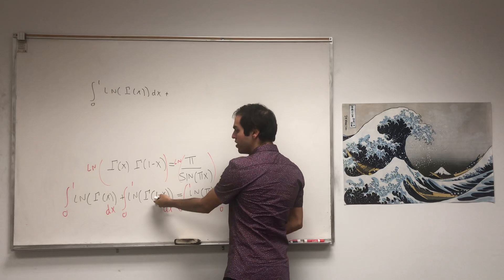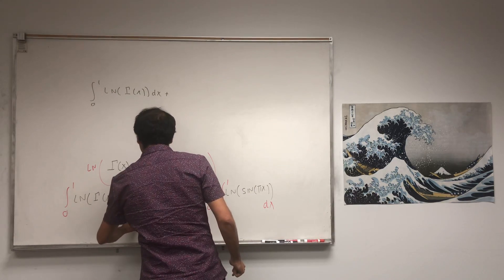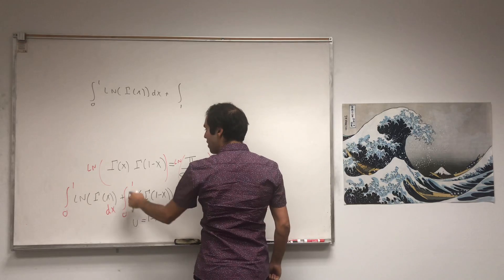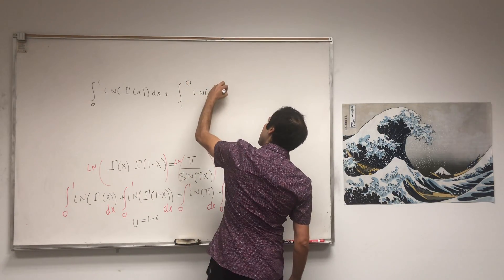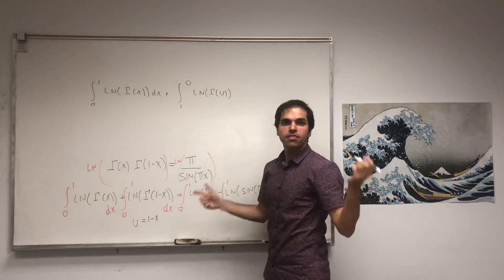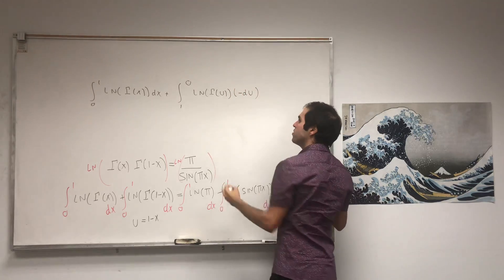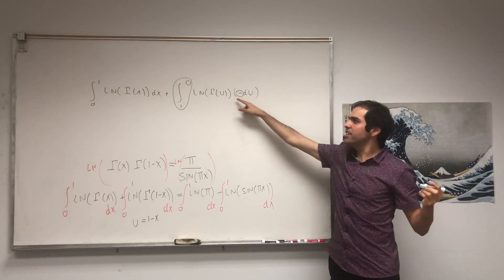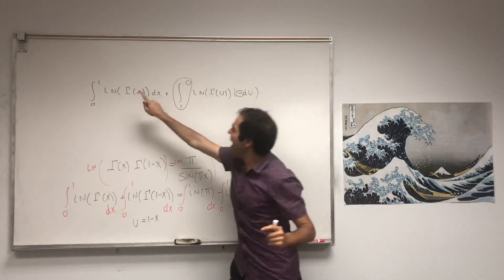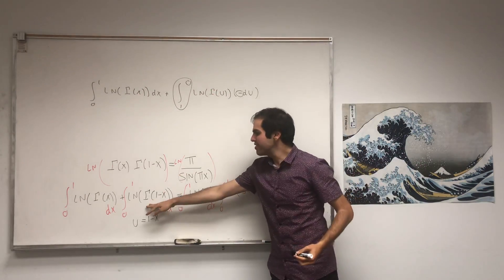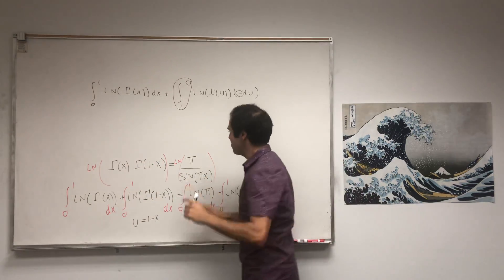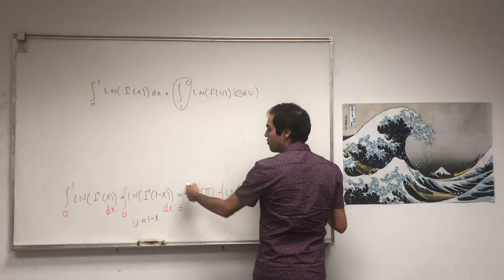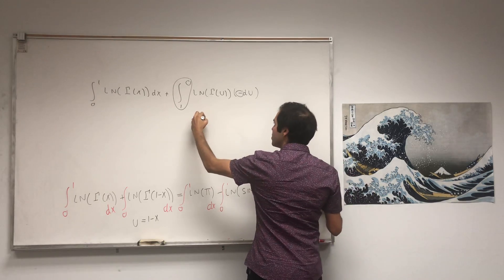What can we do here? We can use a u-substitution. If u equals 1 minus x, then the limits go from 1 to 0, and du is minus dx. So the minus and the flipped limits cancel, and this hard integral turns out to be the same as our original integral. For the right-hand side, this is just a constant: the integral of ln of pi from 0 to 1 becomes ln of pi times 1 minus 0, which is ln of pi.